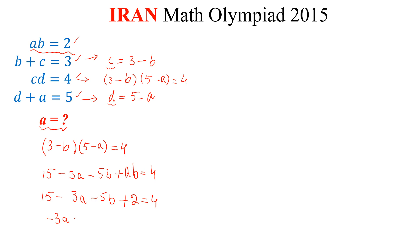We simplify it and we get minus 3A minus 5B plus 13 equals 0. Multiplying both sides by minus 1, we get 3A plus 5B minus 13 equals 0. Now, from this equation, B equals 2 divided by A.